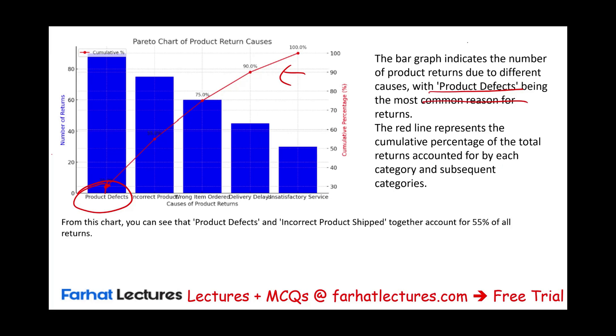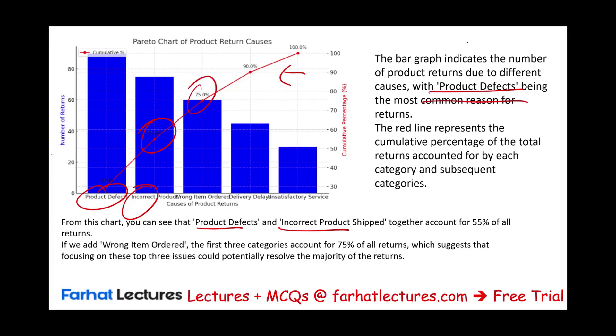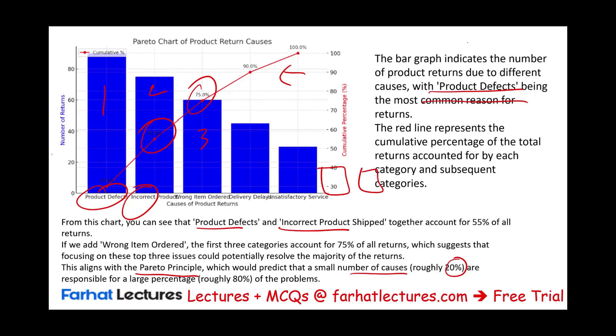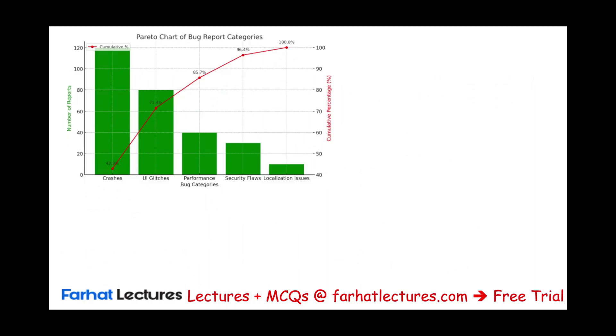This bar graph indicates the number of products returned due to different causes with product defect being the most common reason. The red line represents the cumulative percentage of the total returns accounted by each category. If we add product defect plus incorrect shipped product, those two together represent 55% of all returns. If we add the third item, we're up to 75%. We know that category one, two, and three are the categories that we need to focus on. This aligns back to the Pareto principle, which predicts that a small number of causes, roughly 20%, are responsible for a large percentage.